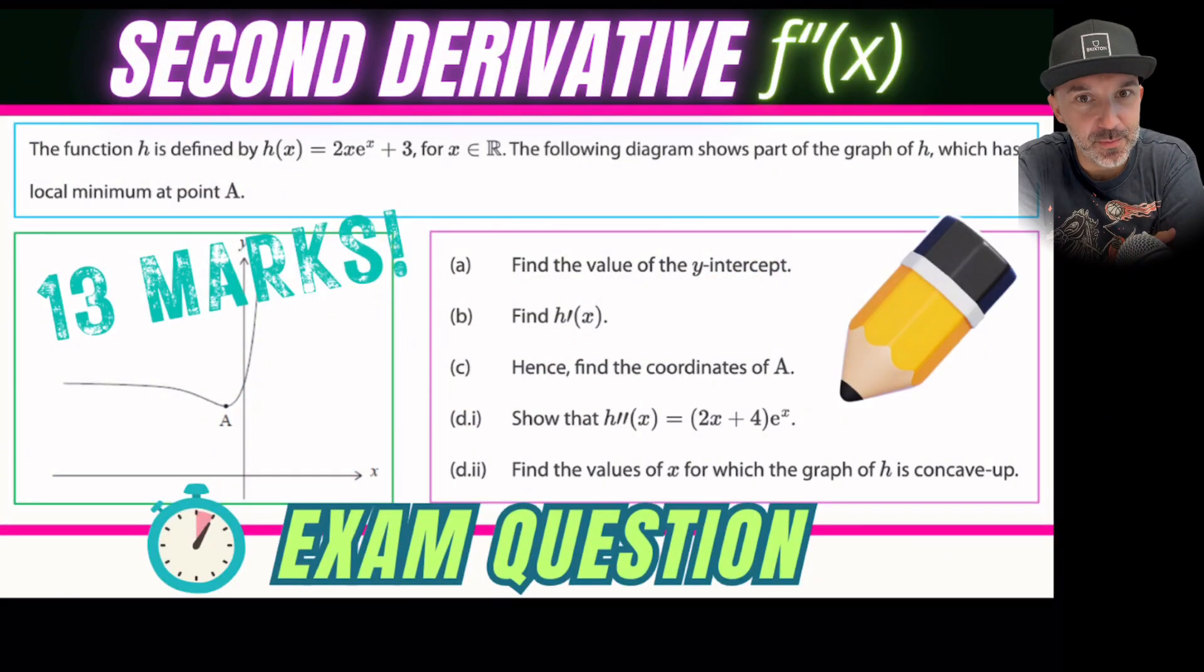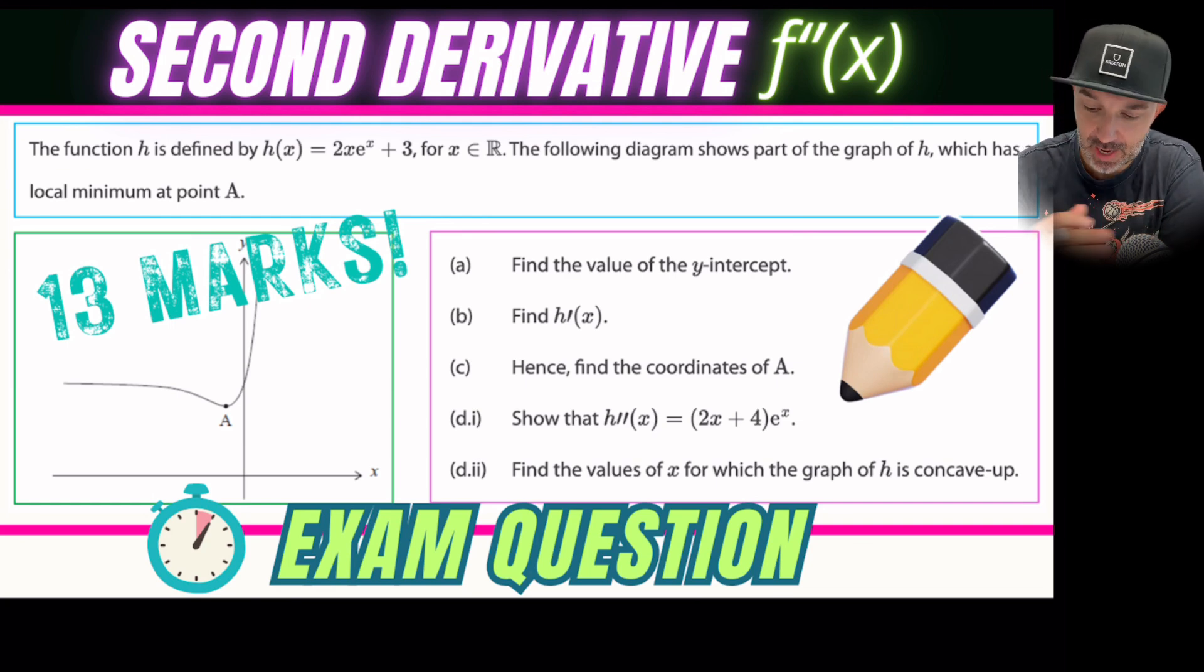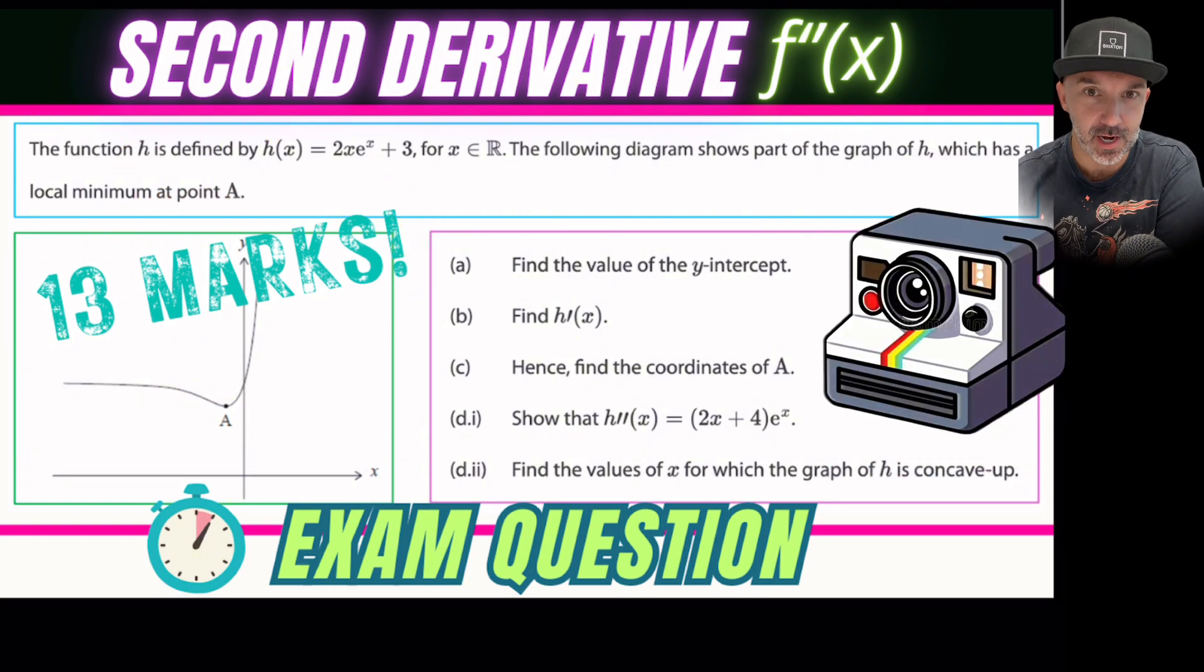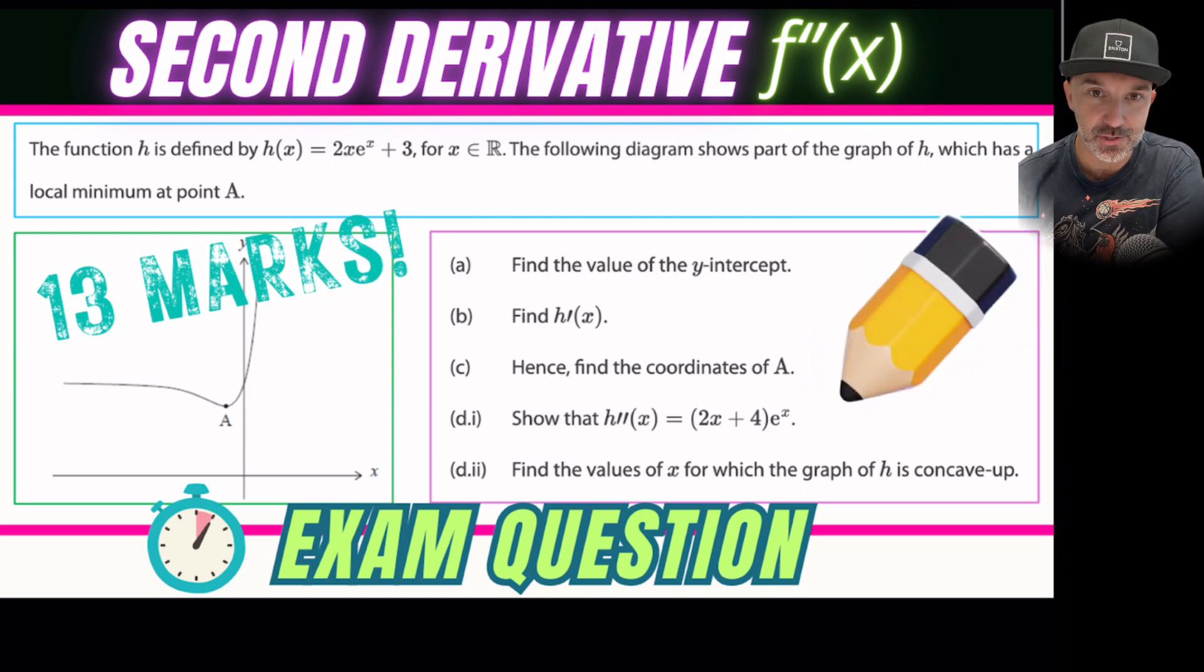Okay, so this is part of the channel where I'm going to go through a past exam question. This one is on differential calculus and it involves the second derivative f double prime. It's worth 13 marks so we should be able to get through this in 13 minutes or less. Take a picture, have a go at it, pause the video and then check back to see the answer. Let's go.